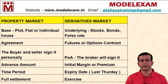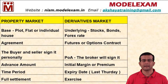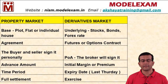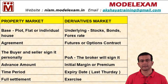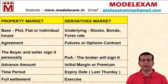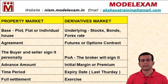This video explains the analogy between the property market and the derivatives market. Looking at this slide, we have a tabular column. In the first row, under the property market, we have the base — what we buy in the property market: a plot, a flat, or an individual house. These form the base for the property market.